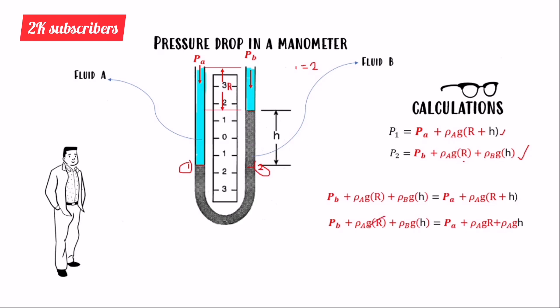Expanding and simplifying, the ρA·g·R terms cancel from both sides. Rearranging to find the pressure difference, we get: PB − PA = ρA·g·H − ρB·g·H, which factors to: PB − PA = g·H·(ρA − ρB). This is the pressure drop formula for the manometer.